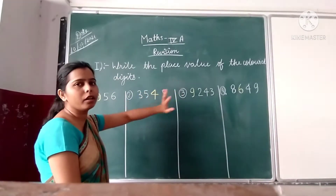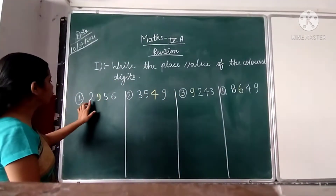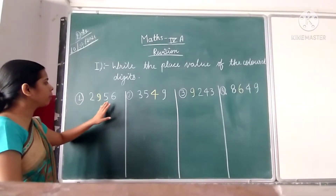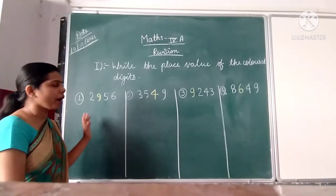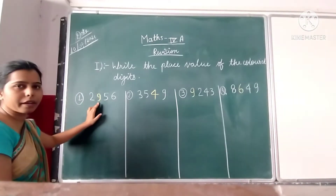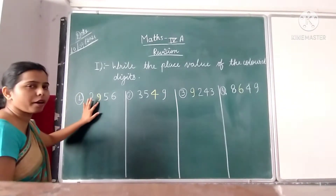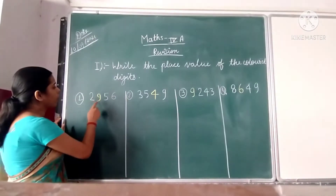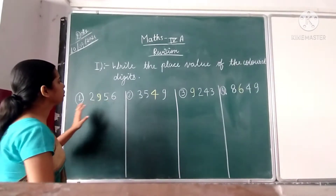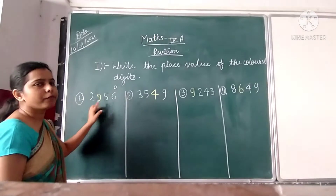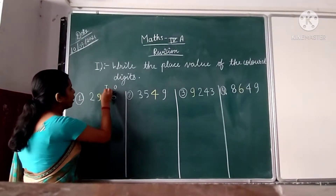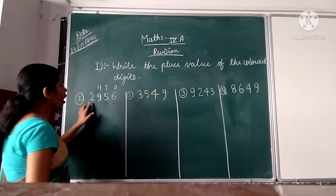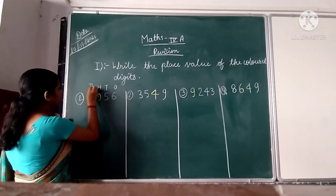Write the place value of the colored digit. First question: 2956. In 2956, we have to find out the place value of digit 9. In this question, 6 represents the value of 1's and 5 represents the value of 10. 9 represents the value of 100 and 2 represents the value of 1000.